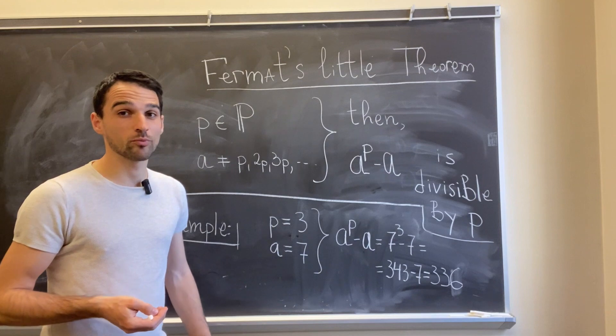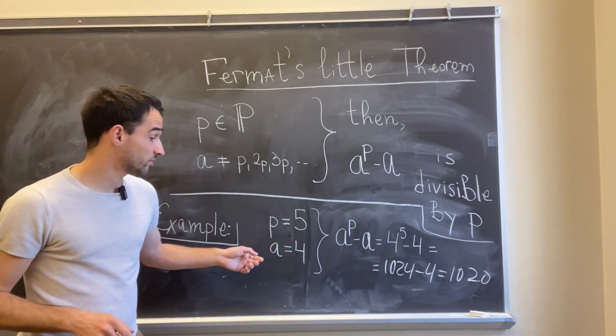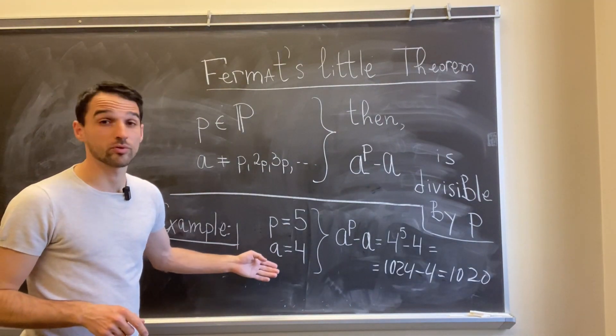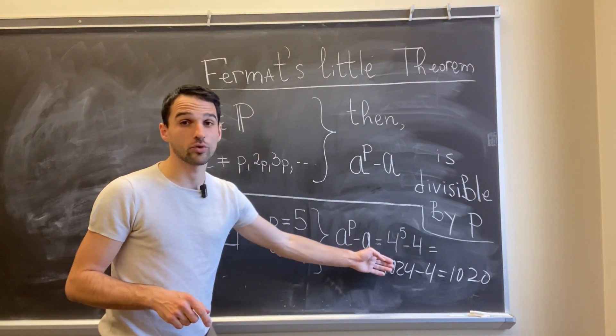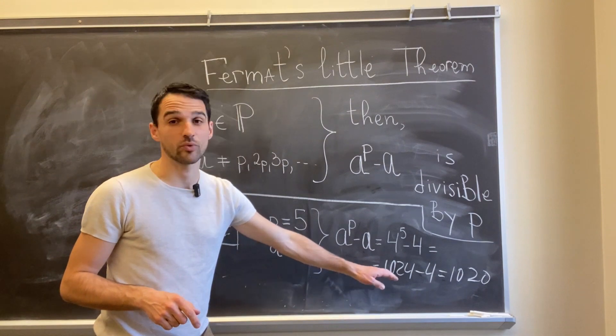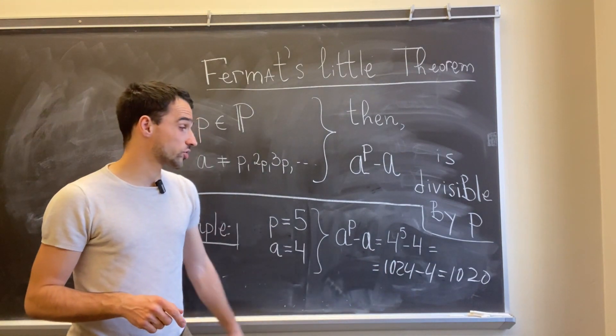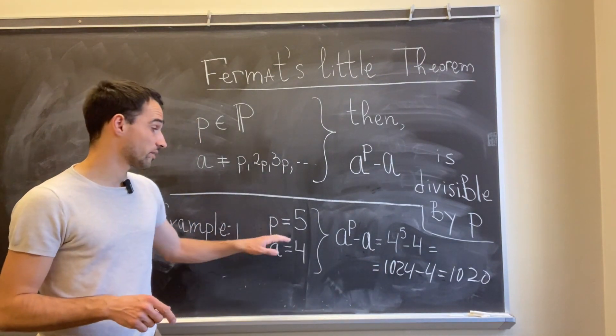Let's look at one more. If I take p equals 5, another prime number, and a equals 4, then a to power p minus a will be just 4 to the power 5 minus 4, or 1020, which of course is divisible by p.